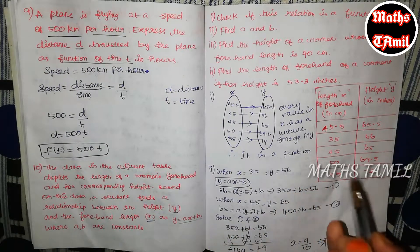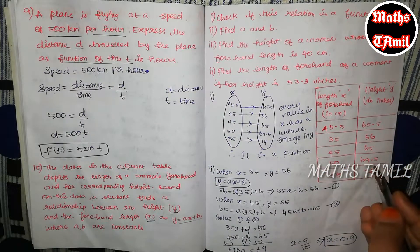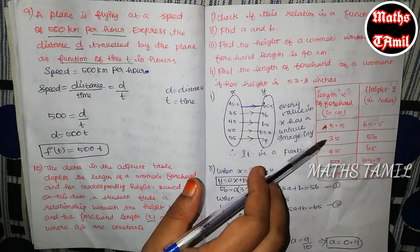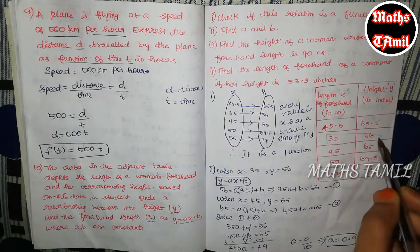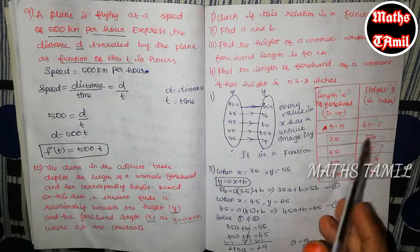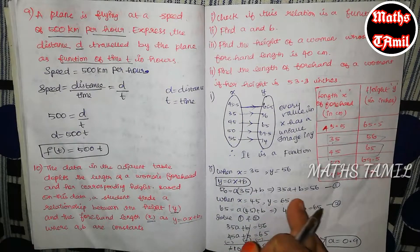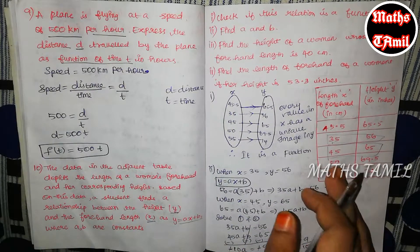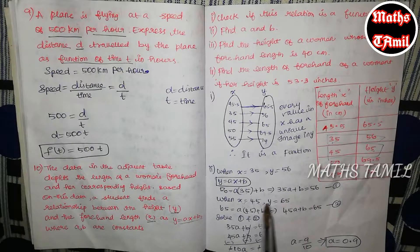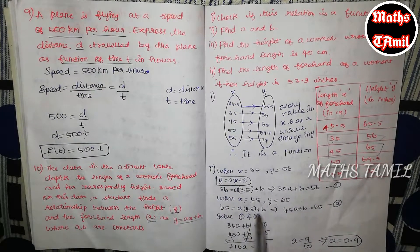Now, how can we find the equation? We compare using the points. We apply this equation and use the values. The first point is x equals 45 and y equals 65. So we apply: x is 45 and y is 65 into equation y equals ax plus b.